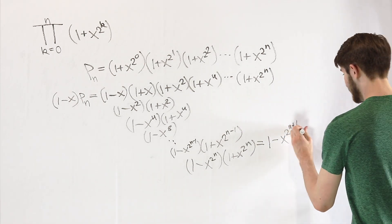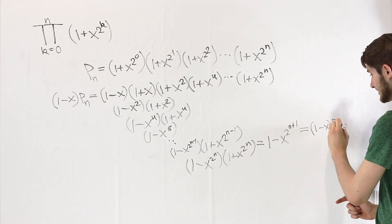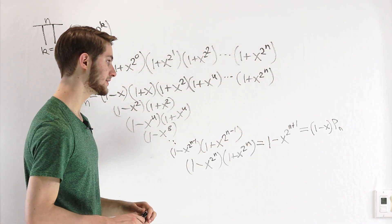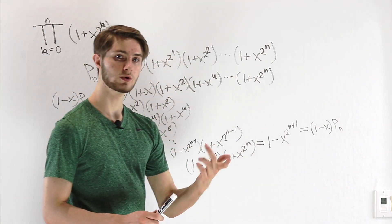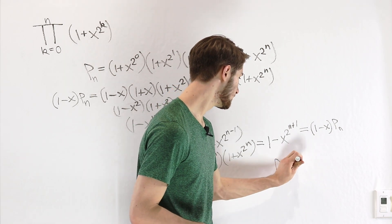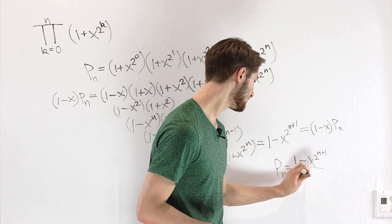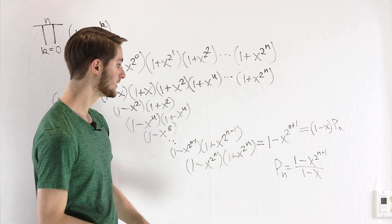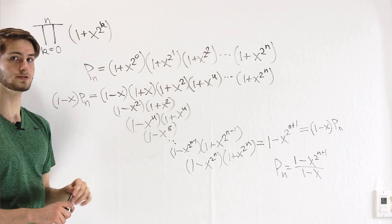That exponent of n plus 1 gives us our general value for (1 minus x) times p sub n. Our goal is to find the value of the product for an arbitrary value of n, so we can just divide both sides by (1 minus x). In that case, we get p sub n is equal to 1 minus x to the 2 to the n plus 1, all over 1 minus x. And this holds for any value of n.